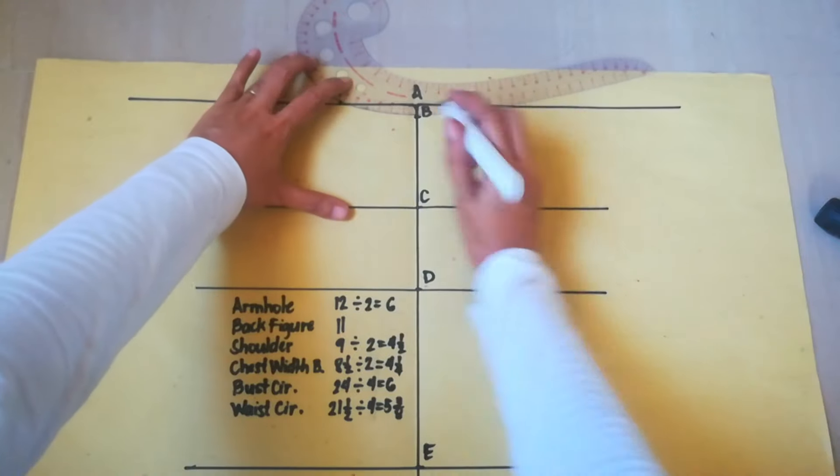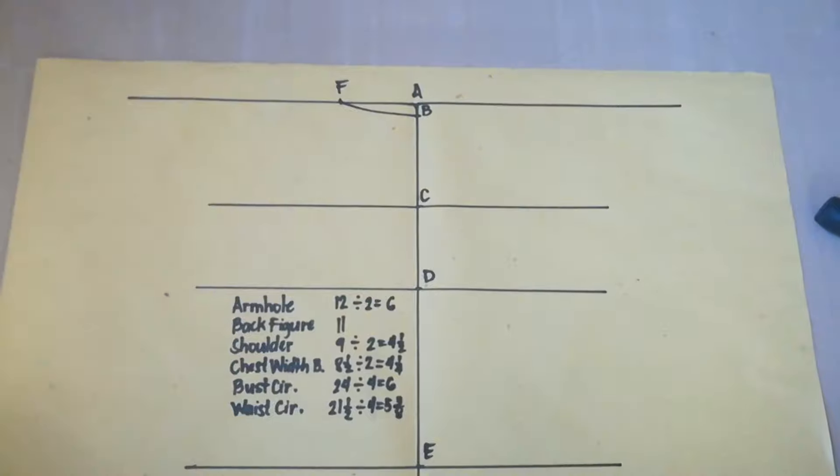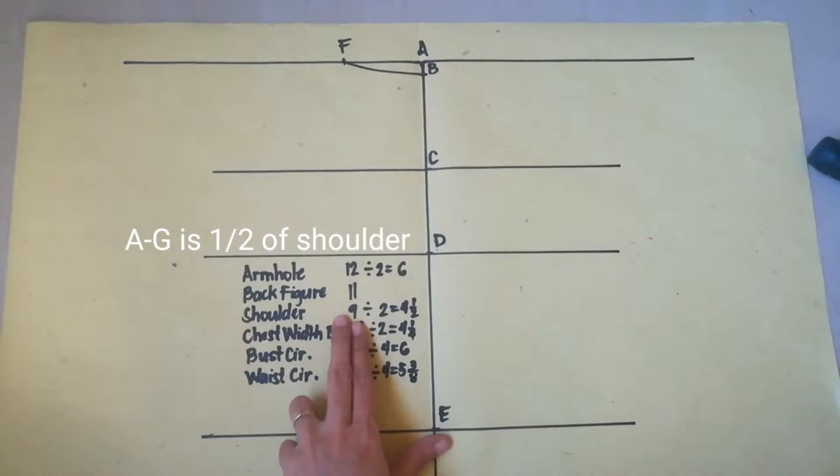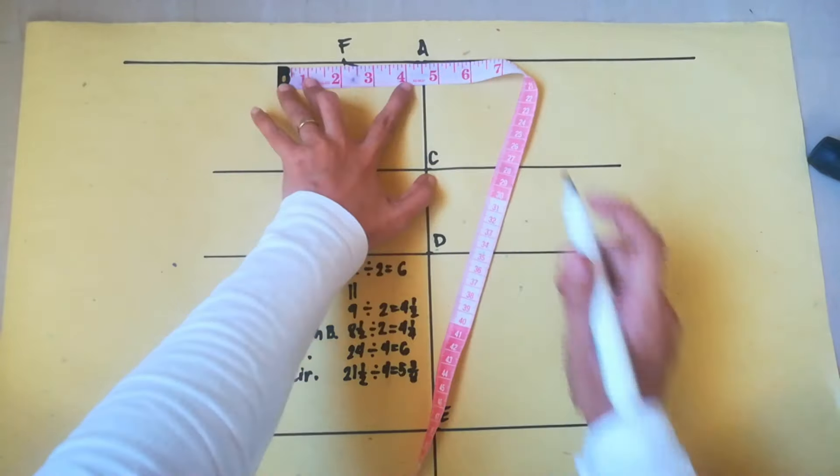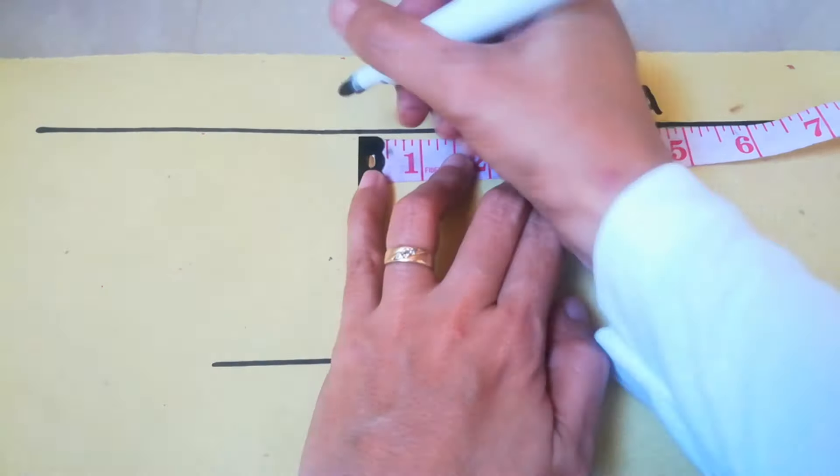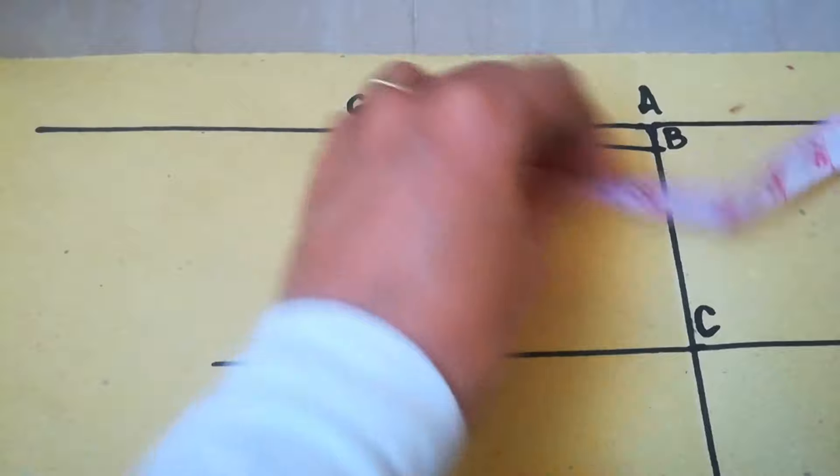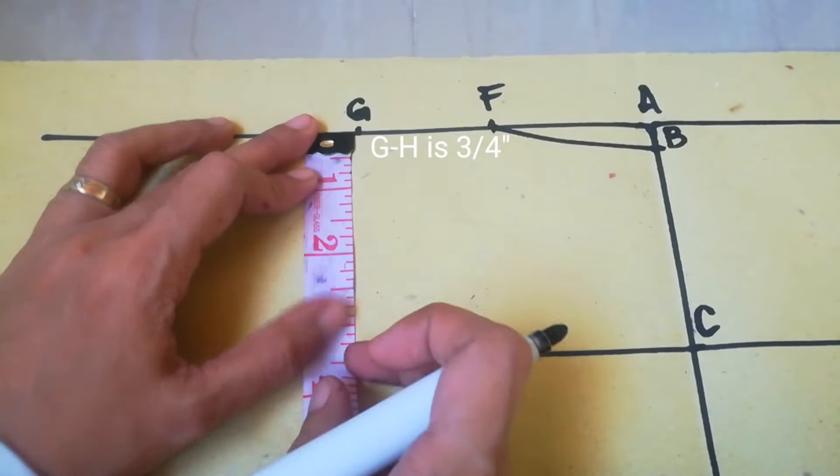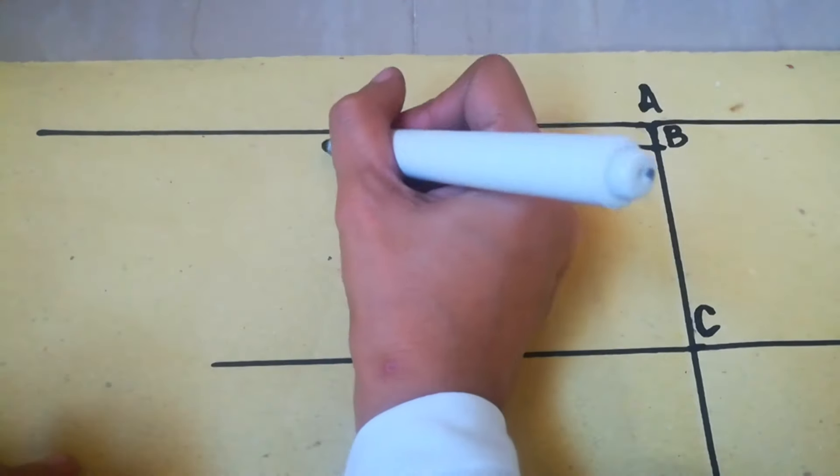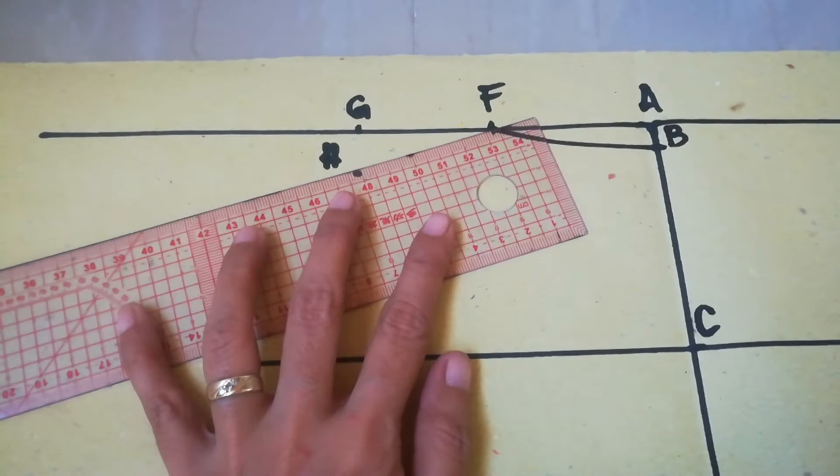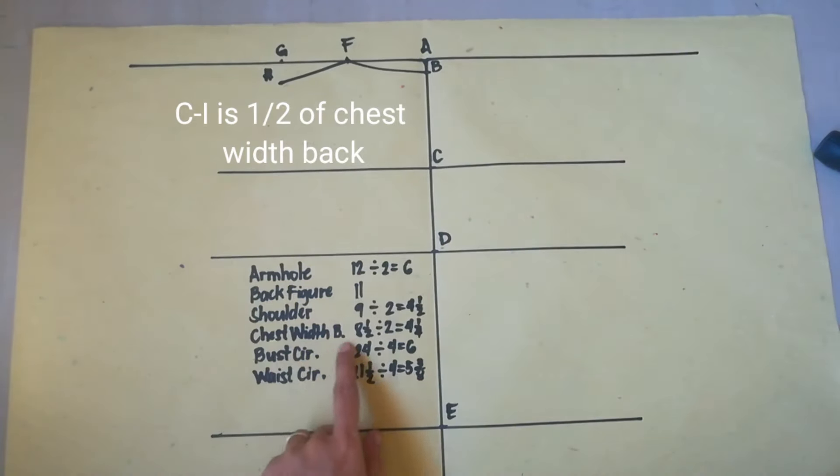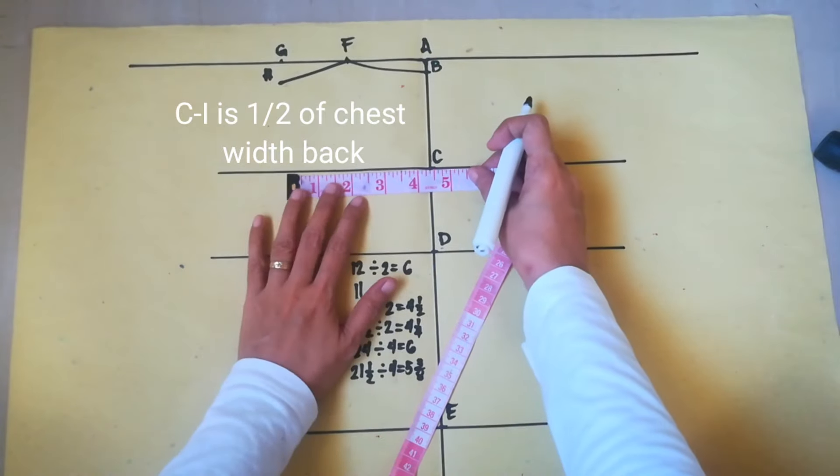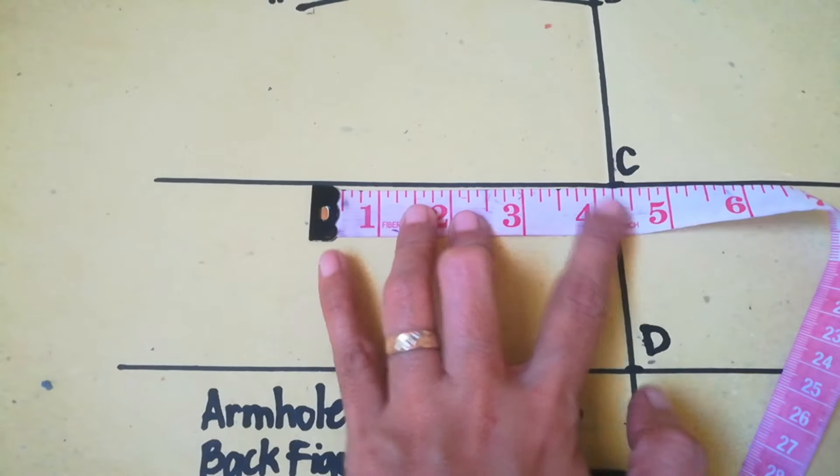A to G is 1 half of shoulder. So, in our example, it is 9 divided by 2 is 4 and 1 half. This is the 4 and 1 half. And mark it point G. And from point G, measure 3 fourth inch downward. And this is point H. Now, connect F and H with ruler.